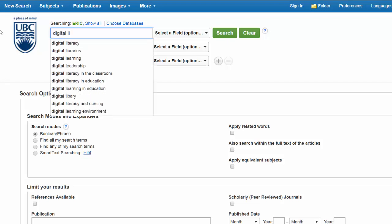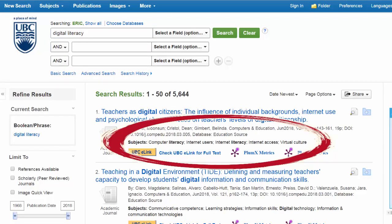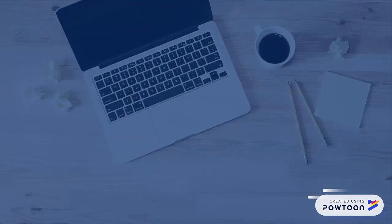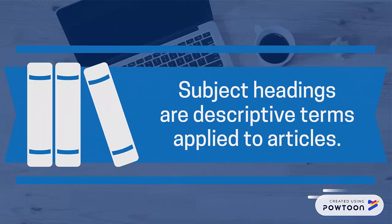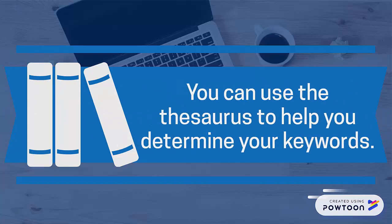Often, the best terms to use as keywords when you're searching in a subject database are the ones that the database uses as subject headings. Subject headings are the descriptive terms applied to each of the articles in the database, and many databases offer a thesaurus to help users find all of their subject headings. The thesaurus can be a really useful tool to check if you're using the same terminology as the database, or if the database represents your keywords with a different term that you can use instead.